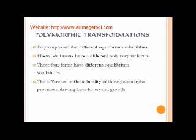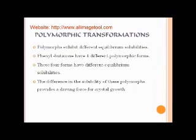Polymorphic transformations: polymorphs exhibit different equilibrium solubilities. In nature, we can find a large number of polymorphs. For each drug substance, there may be 2, 3, 4 or more polymorphic forms. For example, phenylbutazone has 4 different polymorphic forms, and these 4 forms have different equilibrium solubilities. The difference in the solubility of these polymorphs is the main driving force for crystal growth in phenylbutazone.